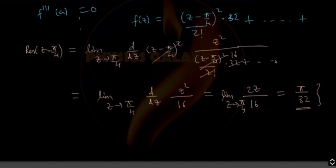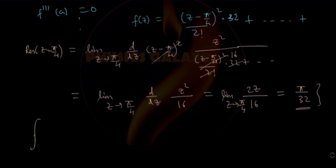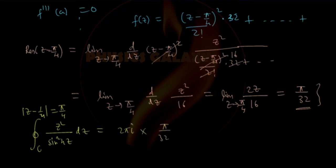Now you know that after finding the residue, you can find the value of the integral. The value of the integral on the circle |z - 1/4| = π/4 for z²/sin²(4z) dz will be 2πi times the sum of residues, which is 2πi · π/32. This equals π²i/16, which was the correct answer.